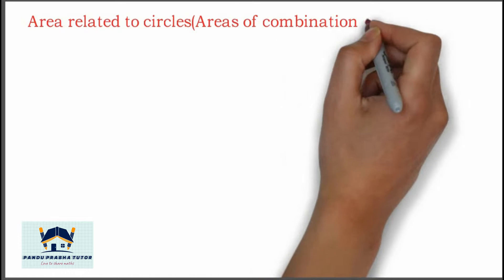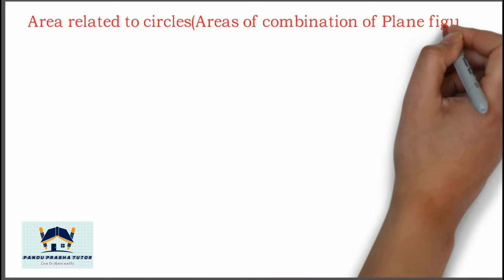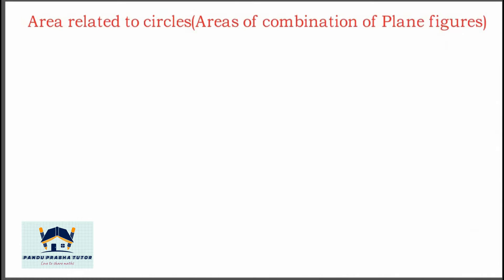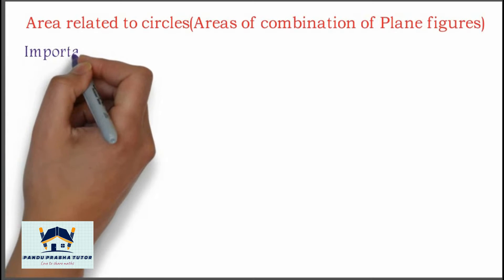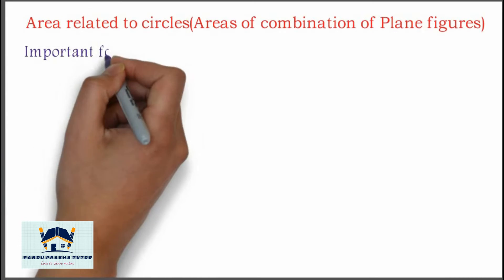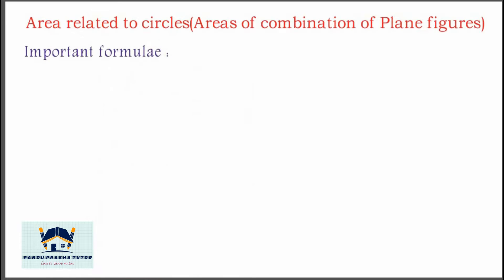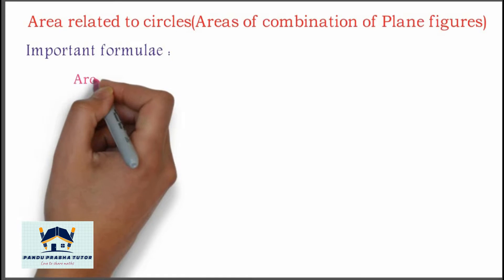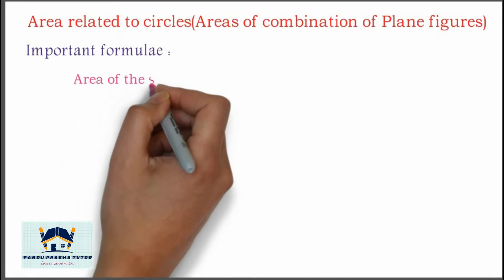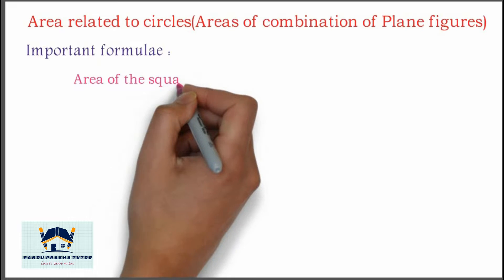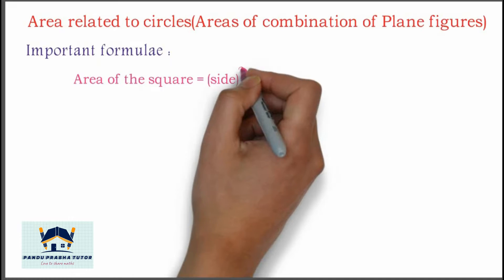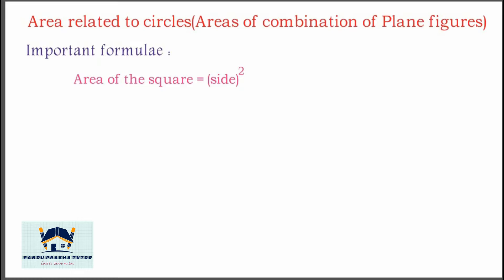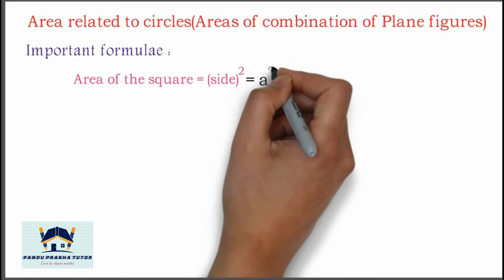Area related to circles — areas of combination of plane figures. First, we will list important formulas. Area of a square is equal to side squared, which is equal to A squared.